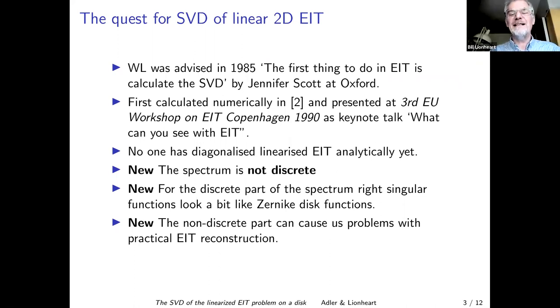So we'd like to do this for EIT. In fact, I wanted to do this since 1985, when Jennifer Scott at Oxford told me that the first thing to do in EIT is to calculate the SVD. I eventually calculated this numerically and presented it at the EU workshop on EIT in Copenhagen in 1990 in a keynote talk called What can you see with EIT? Bill, wasn't that the one where you left your slides on the plane? Yeah, I left the slides on the plane for the first keynote talk, and they came by taxi, and I gave the talk later. And then Jack Neussian cut me off because I was speaking in the wrong slot. So maybe not everyone caught the SVD, and we're going to do it again here.